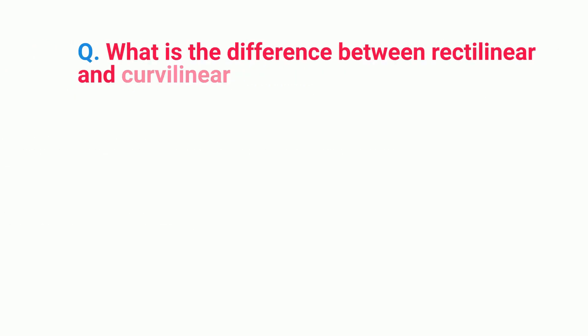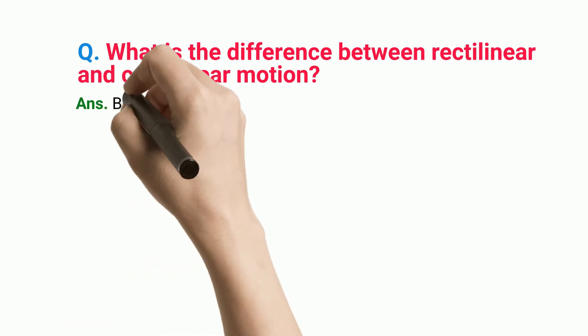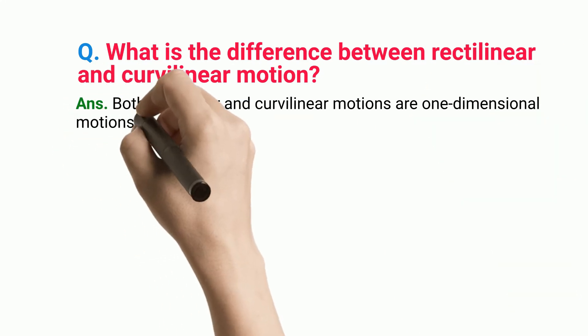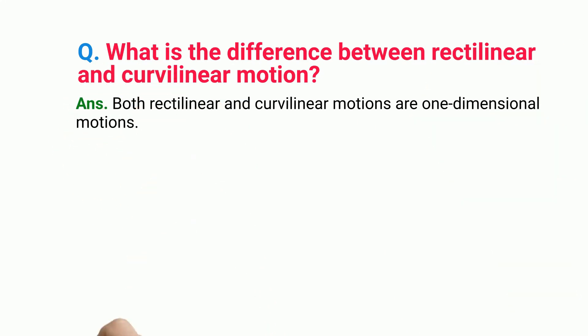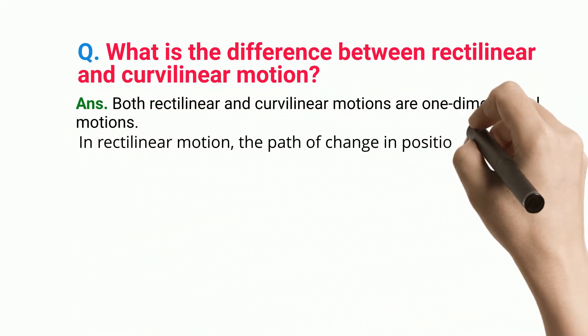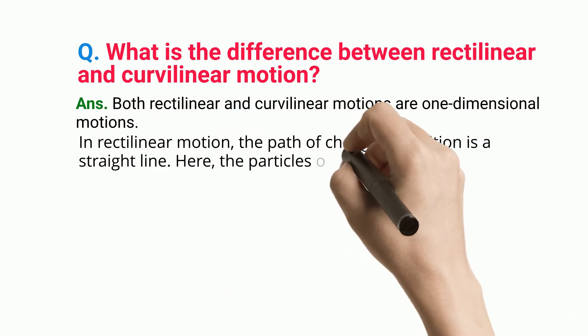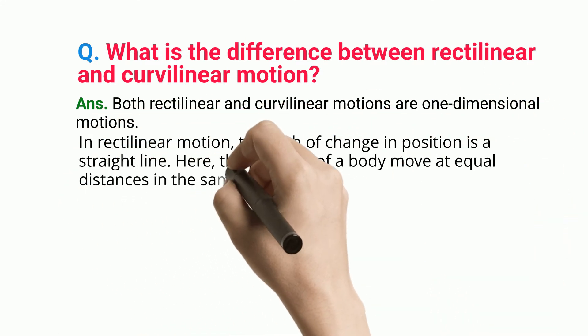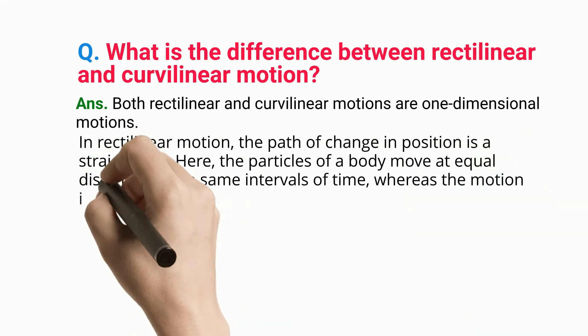What is the difference between rectilinear and curvilinear motion? Both rectilinear and curvilinear motions are one-dimensional motions. In rectilinear motion, the path of change in position is a straight line. Here, the particles of a body move at equal distances in the same intervals of time.